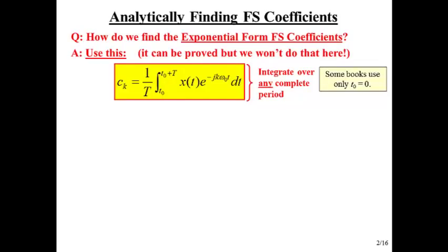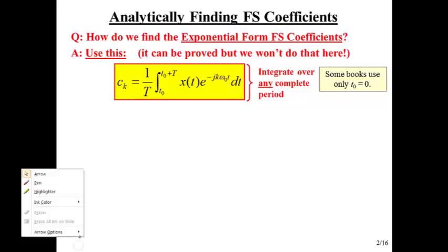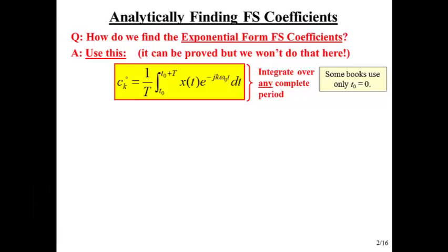So this is for the exponential form. To find those c sub k's that we want, we take x of t, multiply it against the complex sinusoid whose frequency is k omega 0, so that k matches that k. We integrate over one complete period, doesn't matter where we start, start at any t sub 0 and go capital T from there, and then divide by the period.